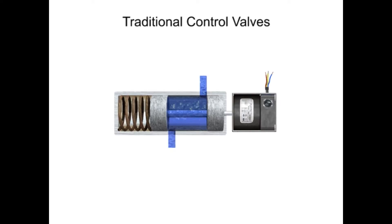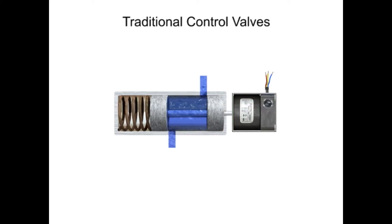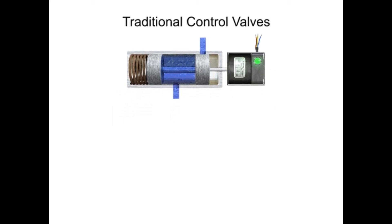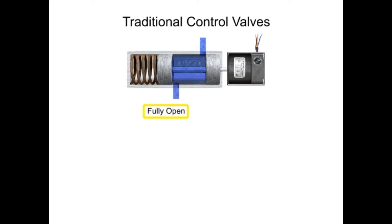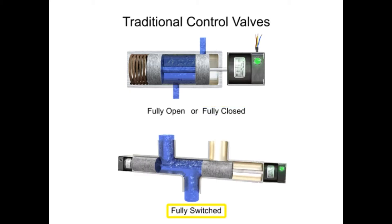Control valves are valves used to control conditions such as flow, pressure, temperature, and liquid level by fully or partially opening or closing. Traditional control valves are the most basic type. The flow control of a traditional control valve is typically limited to fully open, fully closed, or fully switched to a new flow path.